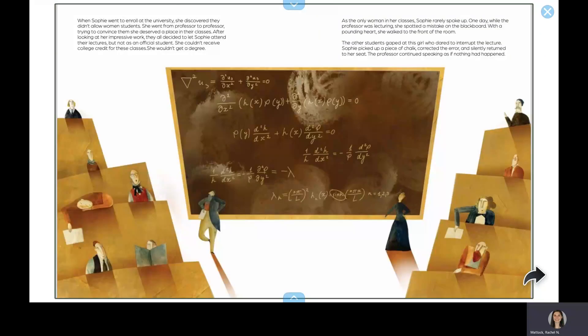When Sophie went to enroll at the university, she discovered they didn't allow women students. She went from professor to professor, trying to convince them she deserved a place in their classes. After looking at her impressive work, they all decided to let Sophie attend their lectures, but not as an official student. She couldn't receive college credit for these classes. She wouldn't get a degree.